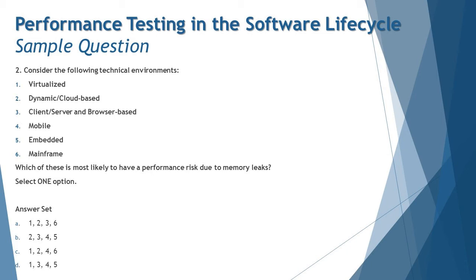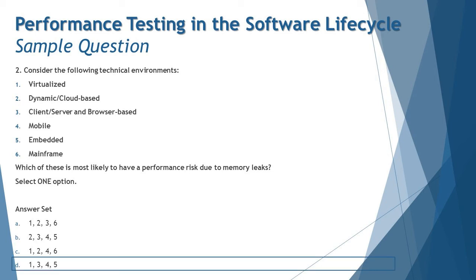Coming to number six, mainframe — which is not an option. Mainframe tends to run older code often written in higher-level languages that provide their own memory management and do not really have memory leak issues. So the right answer is D: 1, 3, 4, 5 — meaning virtualized environments, client-server and browser-based environments, mobile environments, and embedded environments.